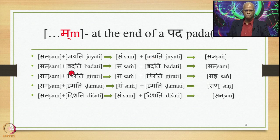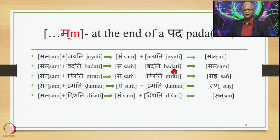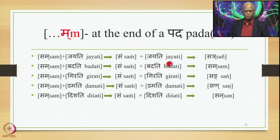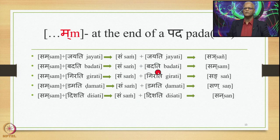Sam plus Badati: Ma is substituted by Anuswara by 8.3.23, giving Sam Badati. Then 8.4.59 substitutes this Anuswara by the nasal Parasavarana of B, which is Ma, giving Sam-Ma-Badati optionally. Optionally also Sam Badati (with Anuswara) is generated.